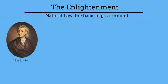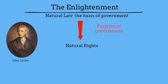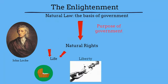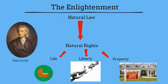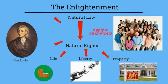John Locke, an Enlightenment thinker, believed that government should be based on natural law. In his view, the purpose of government is to protect the natural rights of life, liberty, and property. Natural law applies to everyone, so according to Enlightenment philosophers, natural rights apply to every person simply because they are born. No state or government can take away your life, liberty, or property without cause.